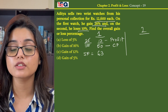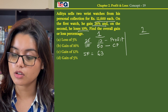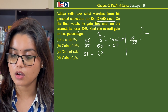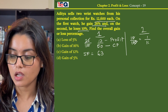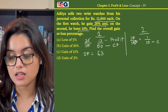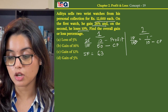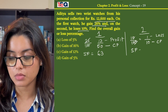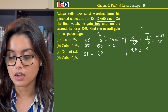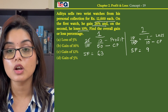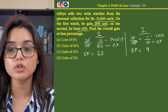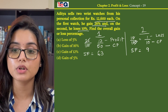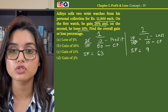In case of the second watch he has a loss of 10%. A 10% loss is 1 by 10, where if 10 is my cost price my loss is 1 and so my selling price becomes Rs 9. Now as per the question, both the watches were sold at the same price, meaning the selling price of both watches are the same.